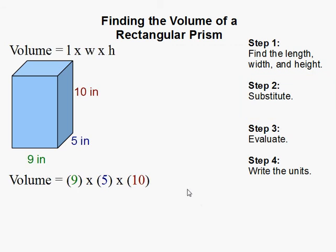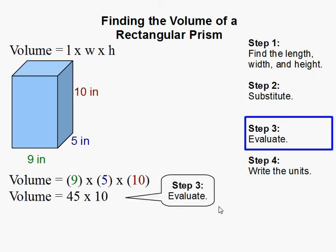Then we simply evaluate or multiply. I'm going to go ahead and do the first two first. So that's 9 times 5 is 45. Then I'm going to do 45 times 10 and get 450.